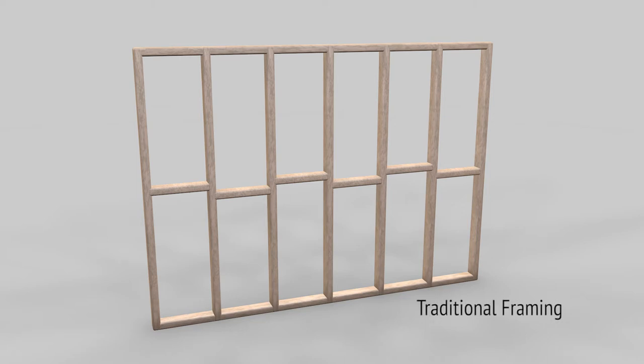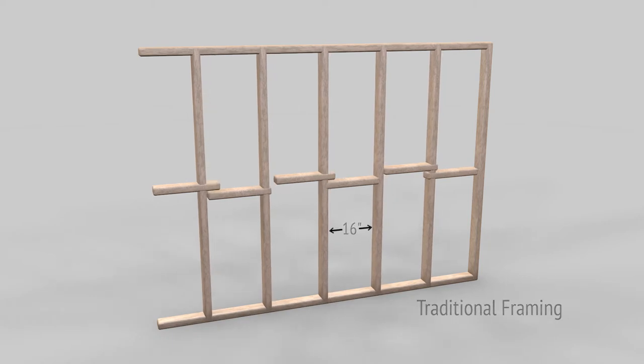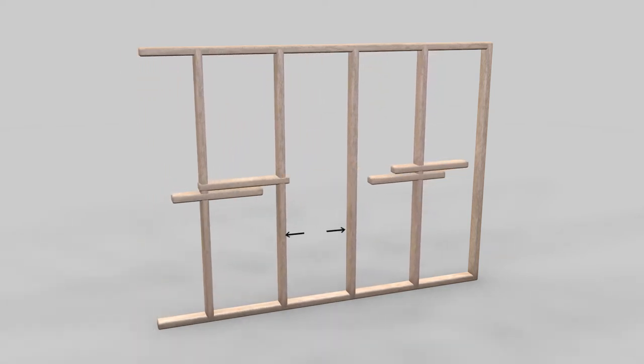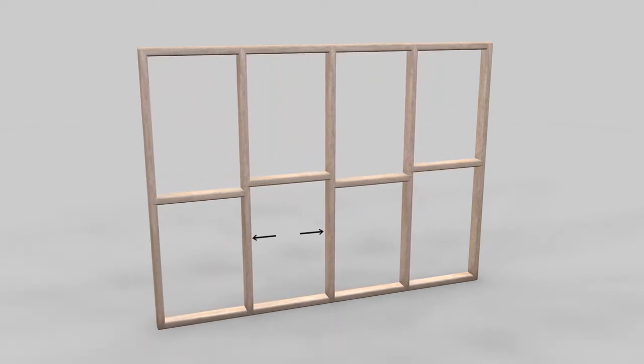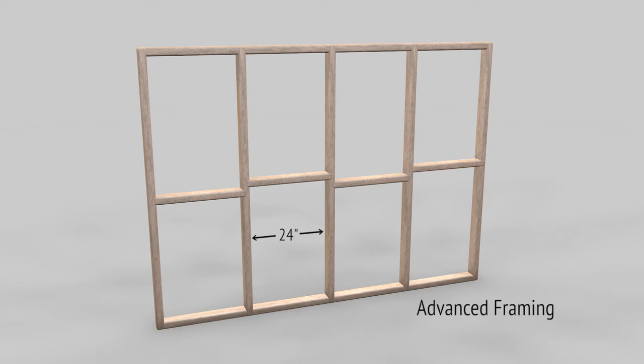This building uses advanced framing, and what that means is that it's typical stick framing housing, but instead of being every 16 inches on center, the wood is on every 24 inches on center. By doing that, we reduce the amount of wood to build this house by about 20%. This house here has 24 inches on center.